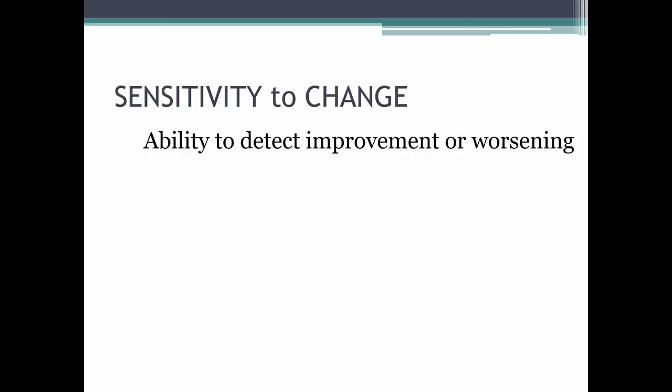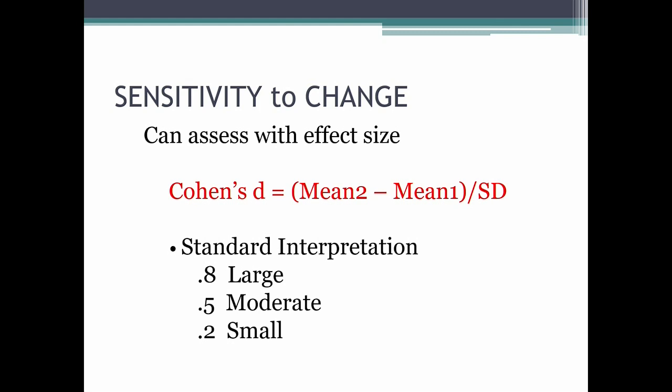Sensitivity to change is the ability to detect improvement or worsening. One way of measuring this is by looking at effect size. For example, if we have two groups — one on drug A and one on a placebo — we can look at the mean of those two groups, divide by the pooled standard deviation, and we get Cohen's D, also known as the standardized mean difference. The standard interpretation is that a Cohen's D of 0.2 is a small effect, 0.5 is moderate, and 0.8 is a large effect.